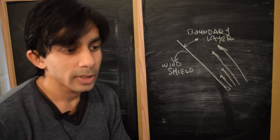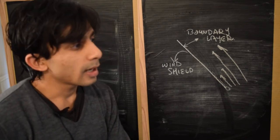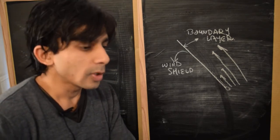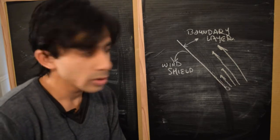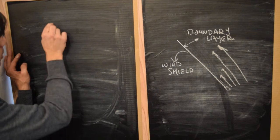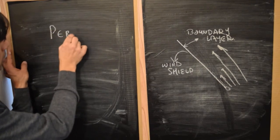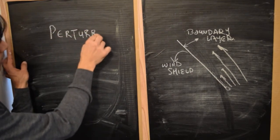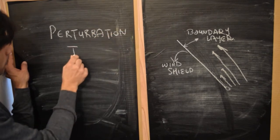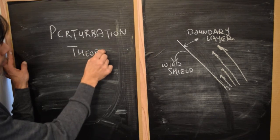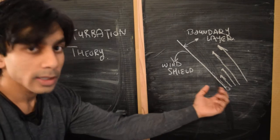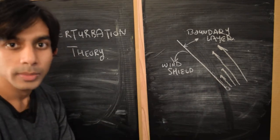It requires certain approximate methods, and these approximate methods are known as, or we can just collectively call them, perturbation theory. And the particular method used to understand the boundary layer formation is known as singular perturbation theory.